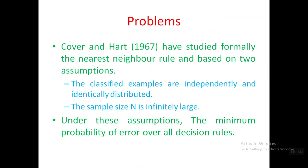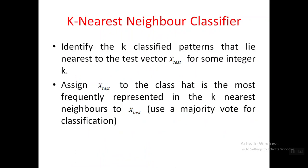There are some problems with this approach. The classified examples are independently and identically distributed — if there is any dependency, the result may be wrong. Also, in one decision we classify the test input, and if that is wrong, everything is wrong. Additionally, the sample size N is assumed to be infinitely large, so the nearest neighbor rule can have a minimum probability of error over all decision rules.